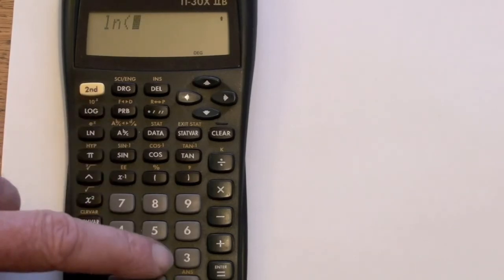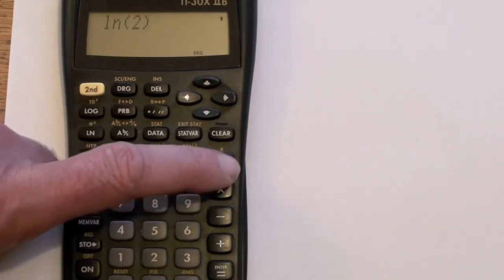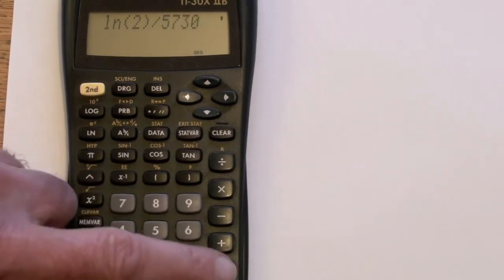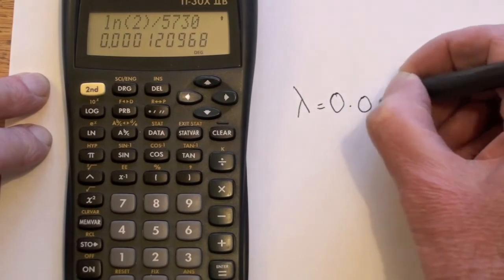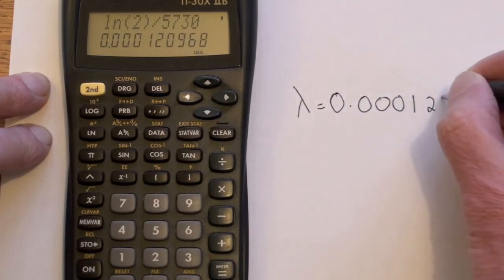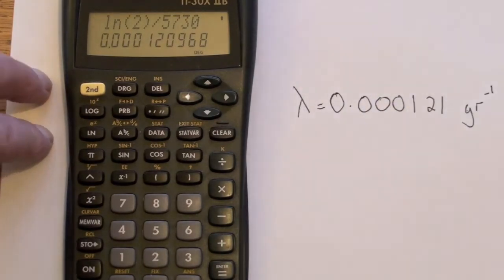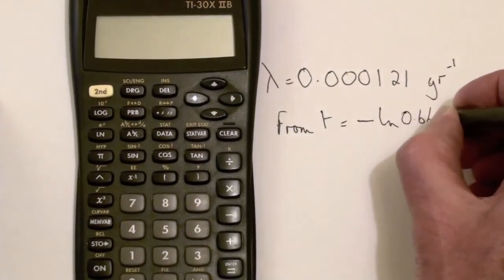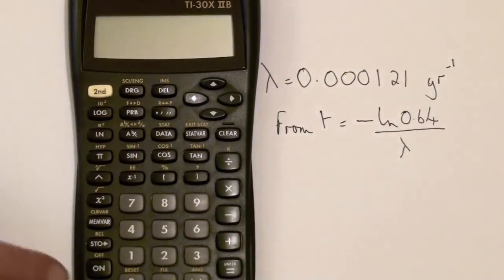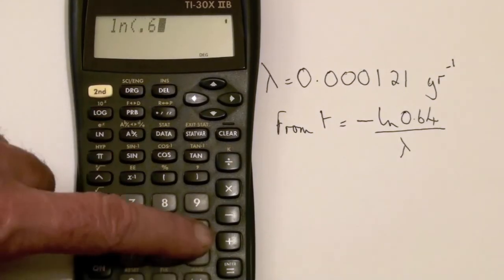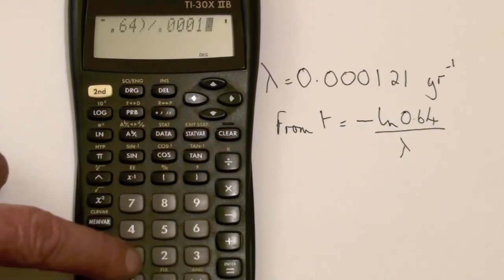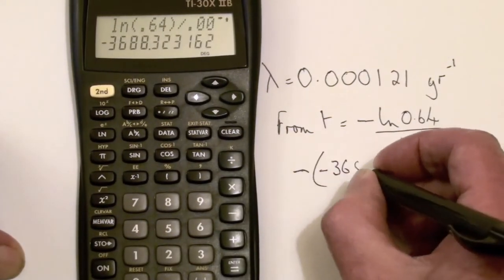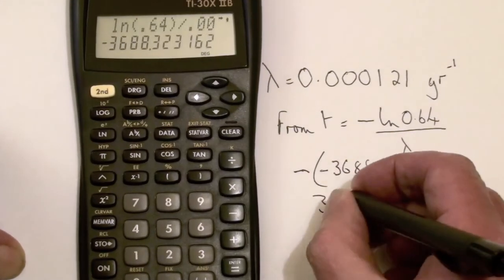Rattling this through on a calculator, we'll keep everything in years. So log to the base 2 divided by 5730 gives us this figure, which is in the units of years to the minus one. From that, we can use the equation we had earlier of the natural log of 0.64 divided by lambda. And that gives us a final figure, the negatives cancel out, of 3688 years.